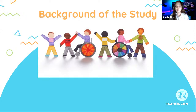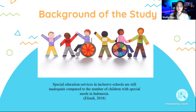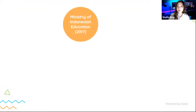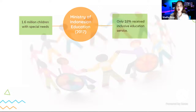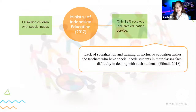Basically, the presence of children with special needs requires education, the same as children without special needs, in order to meet their needs and develop their maximum potential. However, special education services in inclusive schools are still inadequate compared to the number of children with special needs, especially in Indonesia. According to the Ministry of Education in 2017, there are 1.6 million children with special needs, but only 18% receive inclusive education services. This is because of the lack of socialization and training on inclusive education, making it difficult for teachers who have special needs students in their classes.